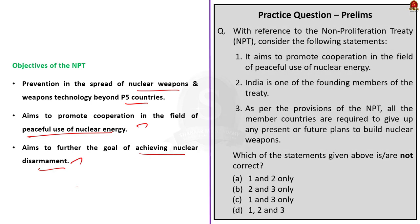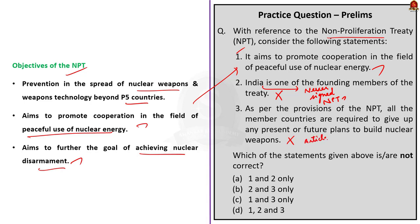Now let's approach the NPT question. Statement 1 — 'It aims to promote cooperation in the field of peaceful use of nuclear energy' — is correct. Statement 2 — 'India is one of the founding members of the treaty' — is incorrect, because India has never signed the NPT. Statement 3 — 'As per the provisions of the NPT, all the member countries are required to give up any present or future plans to build nuclear weapons' — is also incorrect, because P5 countries such as US, UK, Russia, France, and China are exempted from this requirement. The question asks for incorrect statements, so the correct answer is Option B, 2 and 3 only.